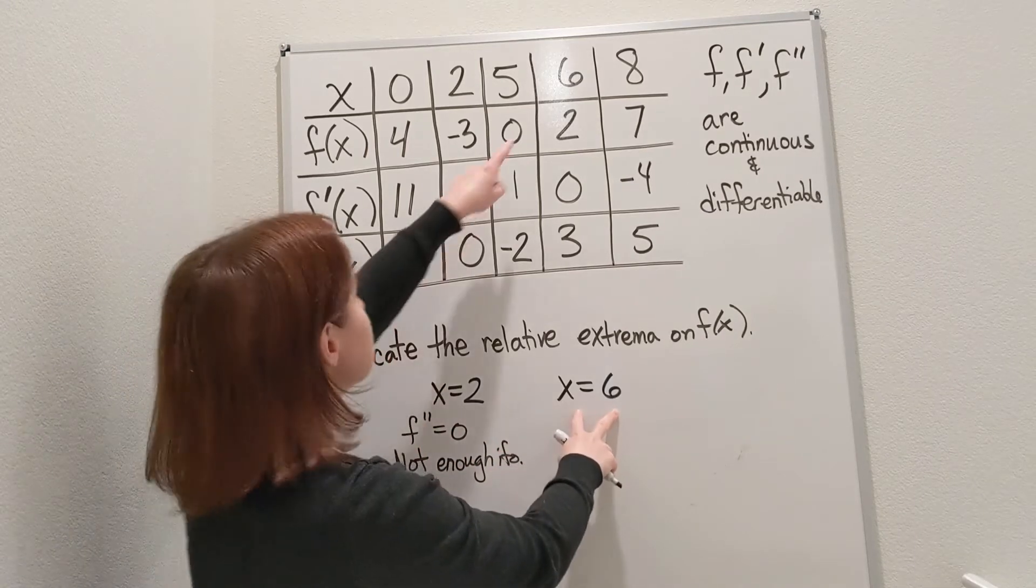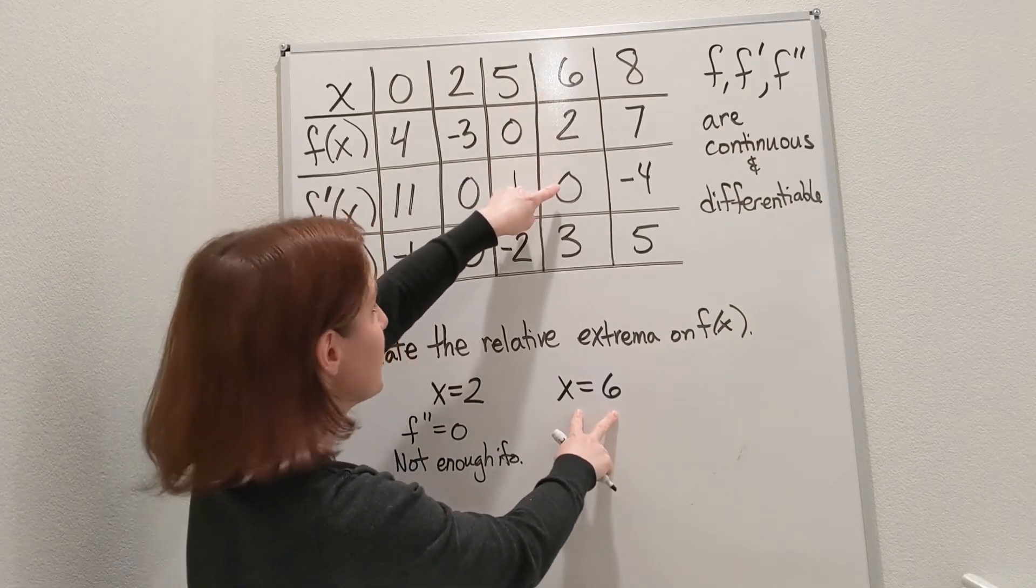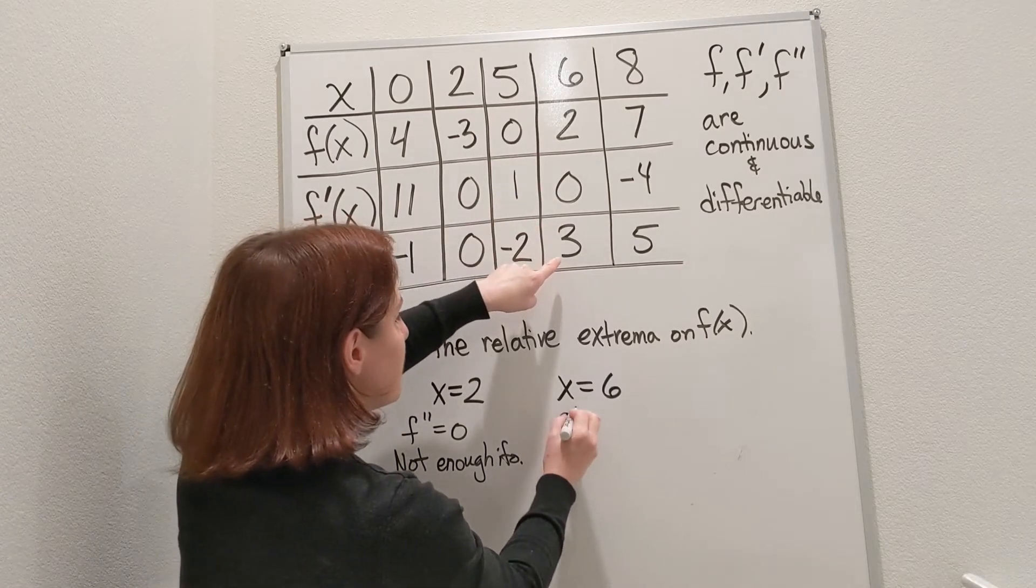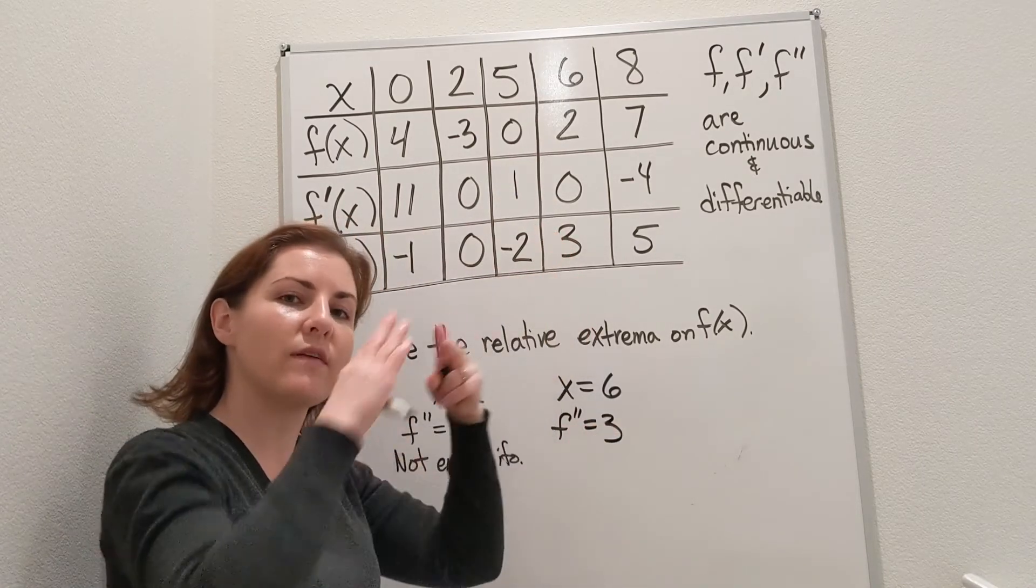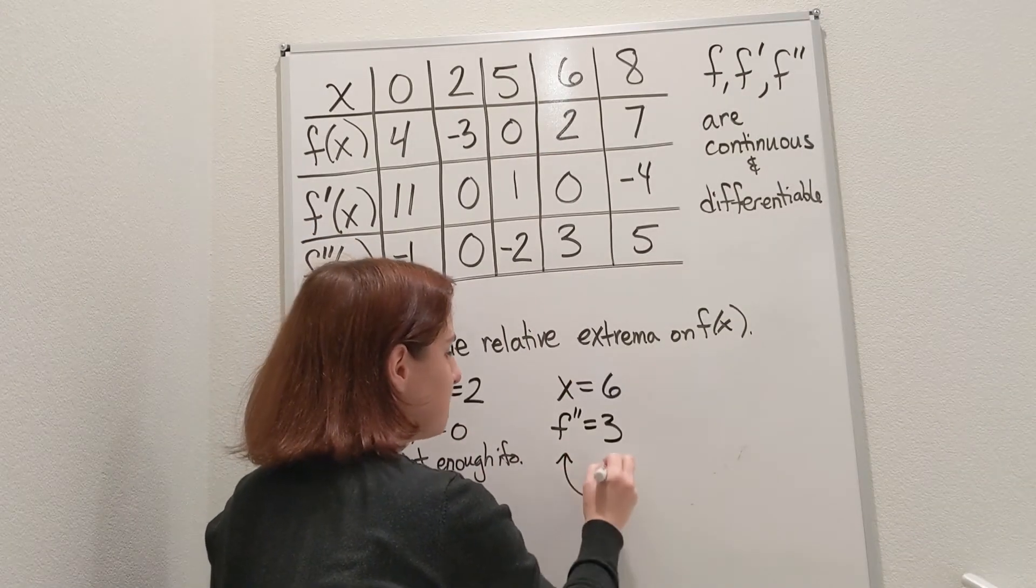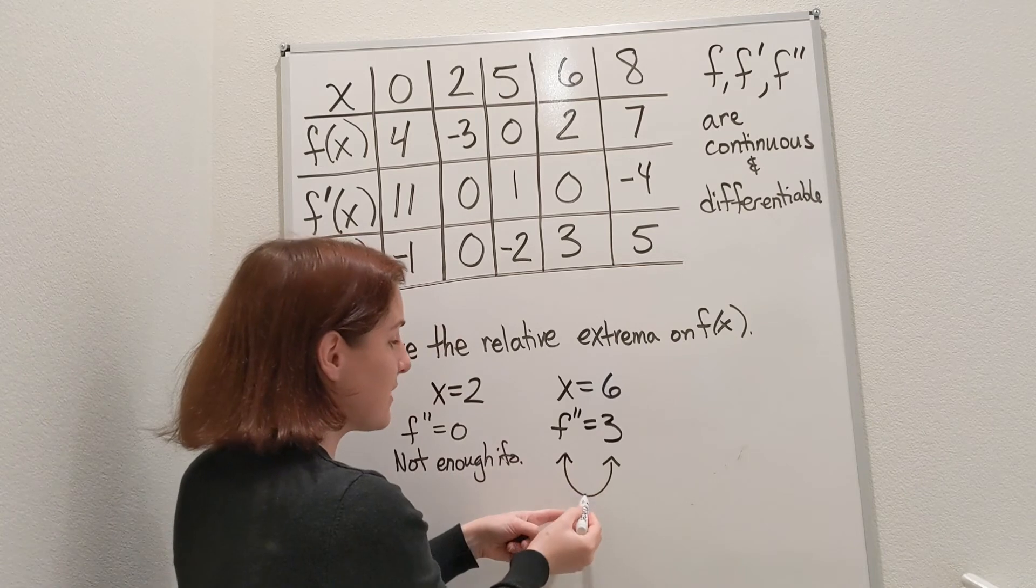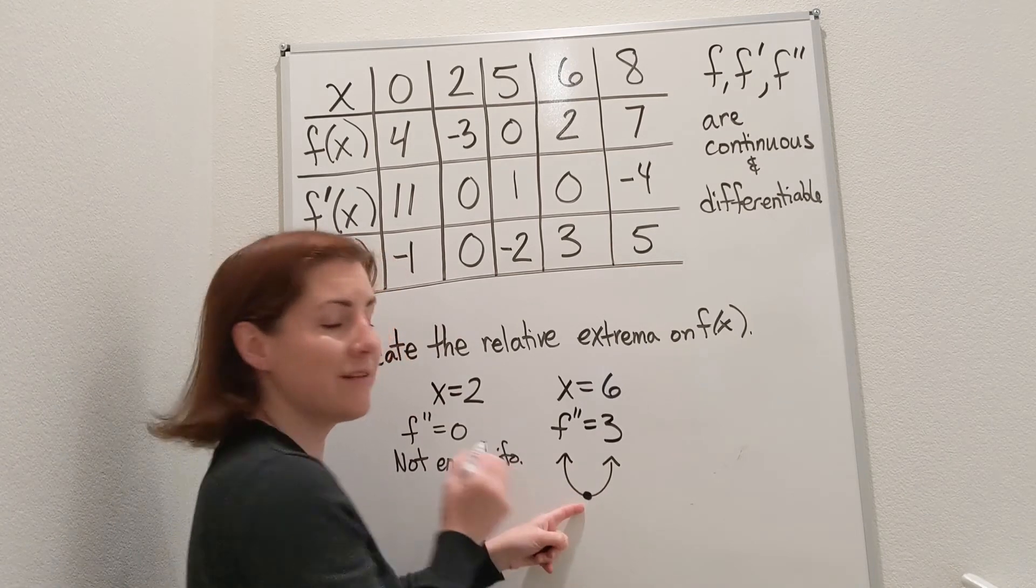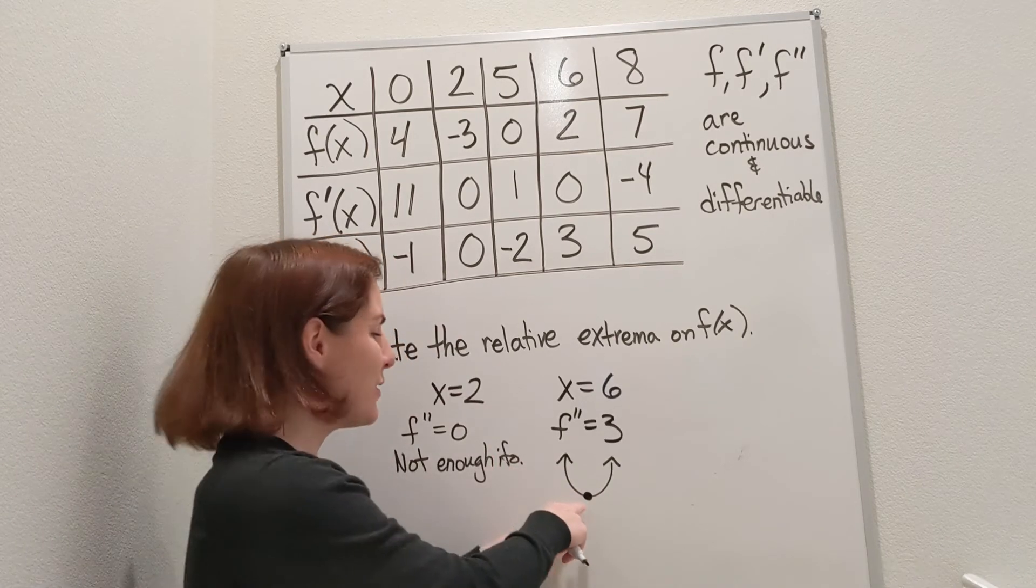But at x=6, when x=6, it's a critical number. The second derivative is three. And a positive second derivative means that the function is concave up. So if the function is concave up, that means that the critical number is going to end up being a local minimum.